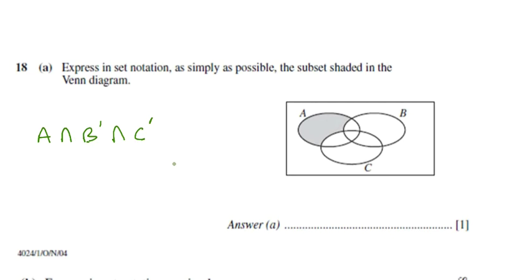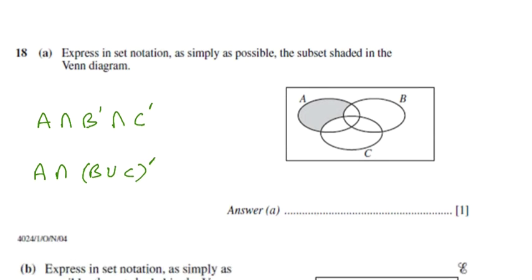Now, of course, there could be multiple ways of representing a shaded region in terms of set notation. For example, in this case, we can say that everything that's inside of A, and the second condition is we have to be outside of B union C. B union C - if we combine B and C, we will be outside. So we could say B combined with C, we have to be outside of it. So that's a complement there.